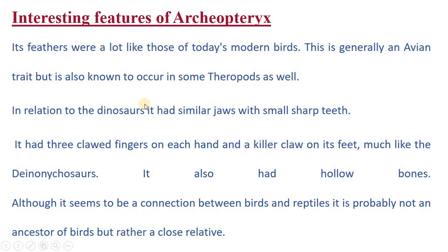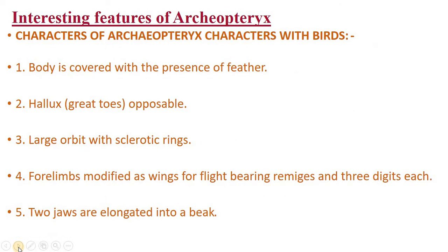In relation to dinosaurs, it had similar jaws and sharp teeth. It had clawed fingers in each hand and a killer claw on its feet, much like the Deinonychus. It also had hollow bones. So it shows similarities between the birds as well as the reptiles.